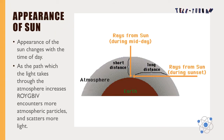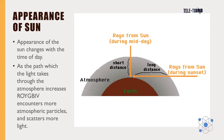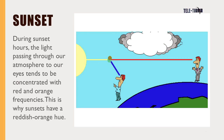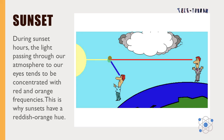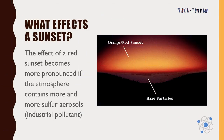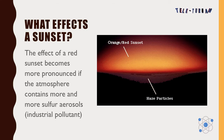The appearance of the sun changes with the time of day. As the path which the light takes through the atmosphere increases, it encounters more atmospheric particles and scatters more light. During sunset hours, the light passing through our atmosphere tends to be concentrated with red and orange frequencies. This is why sunsets have a reddish-orange hue. The effect of a red sunset becomes more pronounced if the atmosphere contains more sulfur aerosols or industrial pollutants.